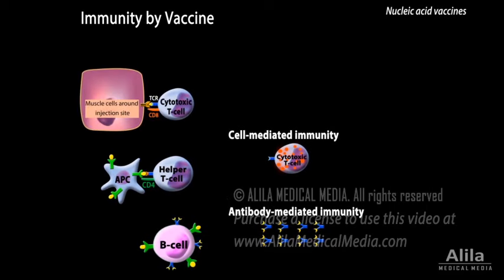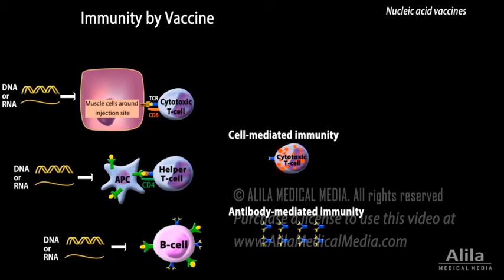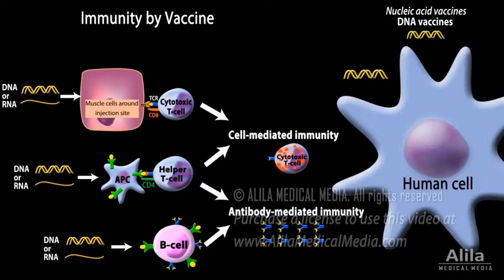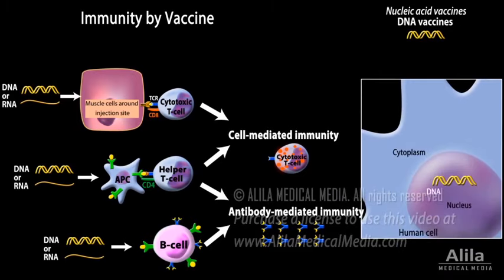Nucleic acid vaccines contain genetic information for making the viral antigen, instead of the antigen itself. DNA vaccines introduce viral DNA into the cell's nucleus, where it is transcribed into mRNA.